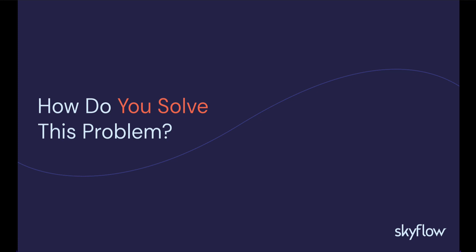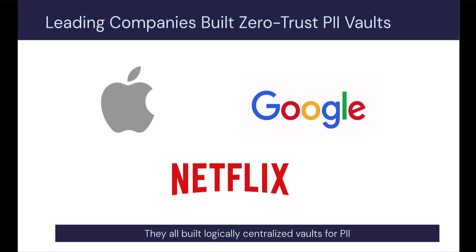If you look at some of the leading technology companies in the world — companies like Apple, Google, Netflix, and a few others — these are not companies showing up in the news because of a data breach. The key insight and commonality between all these companies is that they realize their customer information, which is core to their business, needs to be treated as something special. Because their customer data is special, it needs to be isolated, protected, stored, and managed differently than regular application data. So they pioneered this concept of a zero trust PII data privacy vault.